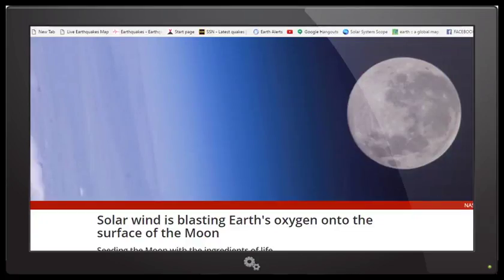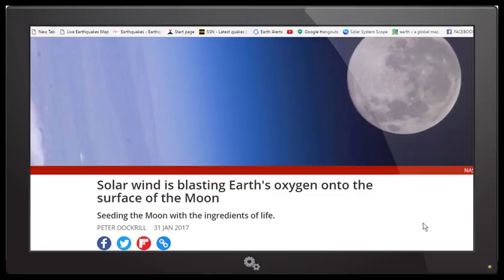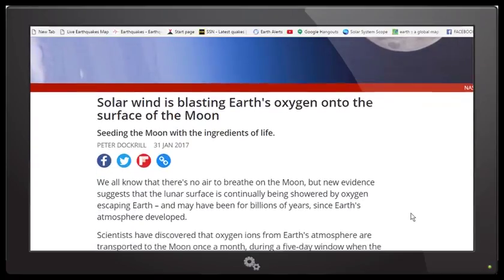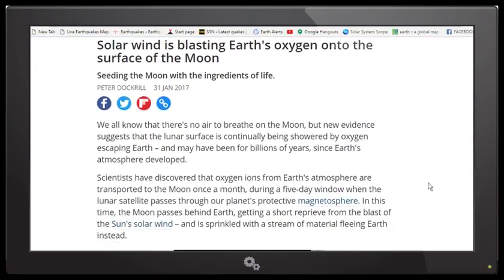Published today: solar wind is blasting earth's oxygen onto the surface of the moon, seeding the moon with the ingredients of life. Yeah, I don't think so. But anyways, this article and the reason why I'm showing you this is because once again this has everything to do with our magnetosphere, the protection of our planet from solar winds and solar radiation which is increasing every tick of the clock.